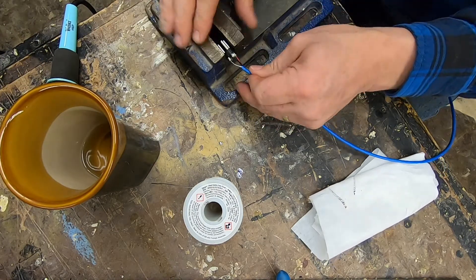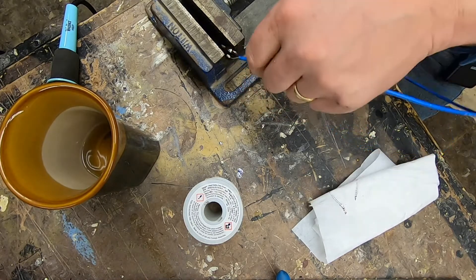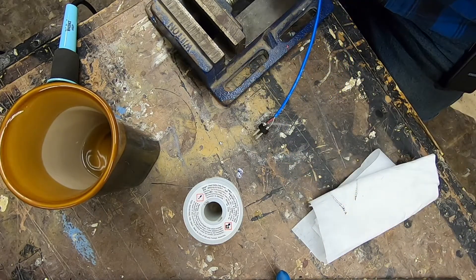The 60 watt soldering iron that I'm using heats the tip up to about 700 degrees.